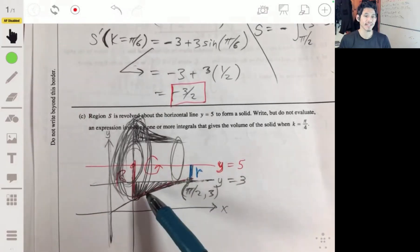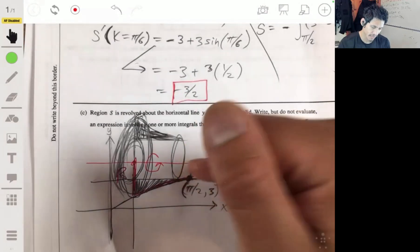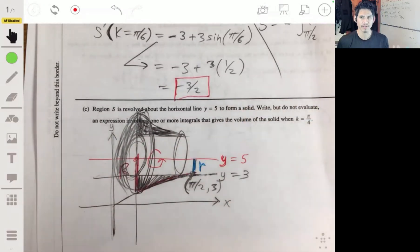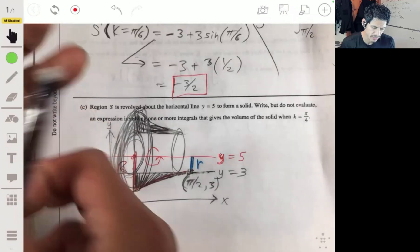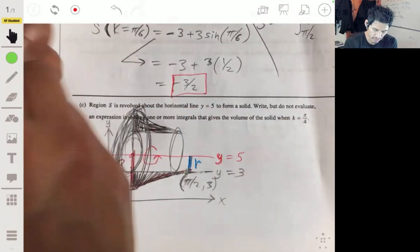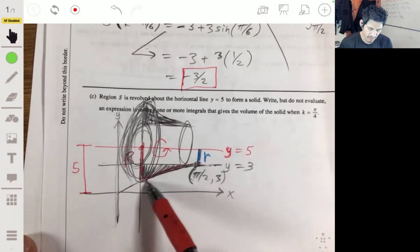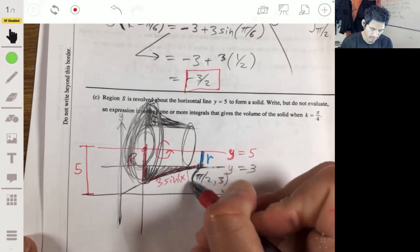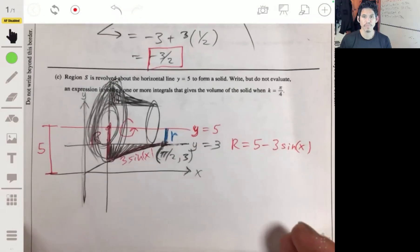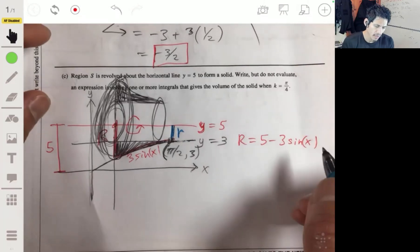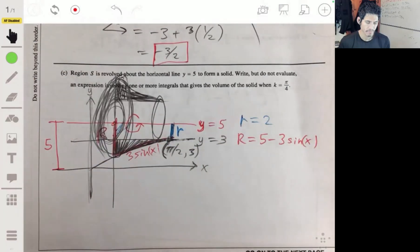Now, it's not so simple as just r being 3 sine of x and little r being like 2. Because you're measuring from down here. But what you're then going to do is to find the big R. Remember, the total length from here to here is 5. So, you're going to do 5 minus 3 sine of x. So, big R is equal to 5 minus 3 sine of x. And little r is just 2. Because it's always the same amount, it's 2.